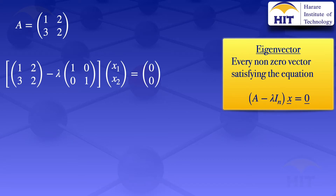In a previous tutorial, we found that the eigenvalues of this matrix were lambda 1 equals 4 and lambda 2 equals minus 1. I will include a link to that video where we solved for those eigenvalues. For each of those eigenvalues, we are going to find an eigenvector.